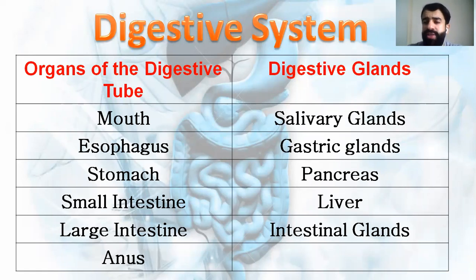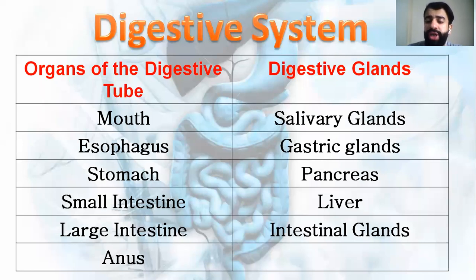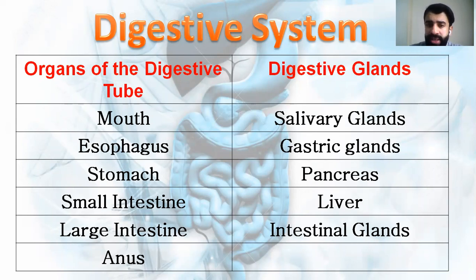The digestive glands are organs through which food does not pass. These include the salivary gland found inside the mouth, the gastric gland at the level of the stomach, the pancreas, the liver, and the intestinal gland at the level of the small intestine.